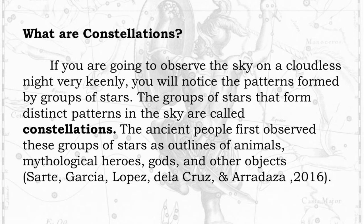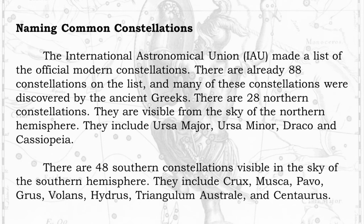What are constellations? If you are going to observe the sky on a cloudless night very keenly, you will notice the patterns formed by groups of stars. The groups of stars that form distinct patterns in the sky are called constellations. The ancient people first observed these groups of stars as outlines of animals, mythological heroes, gods, and other objects. The International Astronomical Union (IAU) made a list of the official modern constellations. There are already 88 constellations on the list, and many of these were discovered by the ancient Greeks.